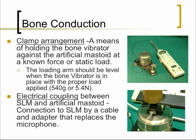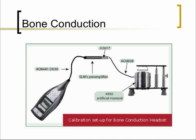With the clamp, you simulate the tension the headband places when the bone vibrator is on the mastoid — approximately 540 grams. The band helps confirm you're maintaining that tension. This is an electrical coupling, not an acoustical coupling, between the sound level meter and the artificial mastoid. The connection to the SLM by cable replaces the microphone used for the rest of calibration. The artificial mastoid converts the mechanical vibration into electrical equivalent, fed to the sound level meter to be measured.